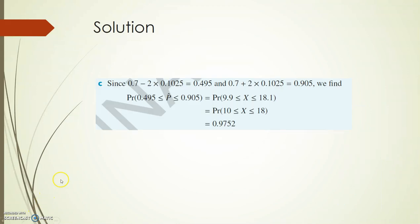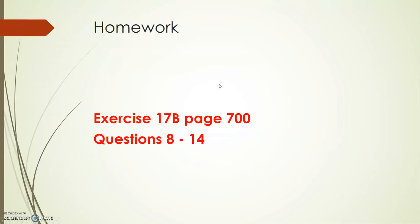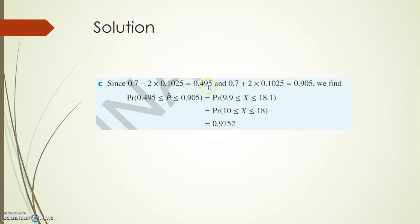Now let's look at part c. Two standard deviations below the population proportion gives 0.495, and two standard deviations above gives 0.905. We need to work out 0.495 times 20, which is 9.9, and 0.905 times 20, which is 18.1. We change both of these to the nearest whole numbers within the interval: 9.9 rounds up to 10 and 18.1 rounds down to 18. So we need to find the probability that x is between 10 and 18. Using binomial CDF, the answer is 0.9752.